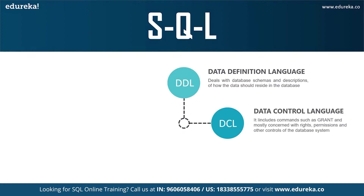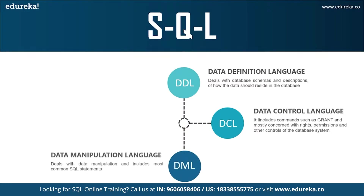Moving on to DCL, that is Data Control Language. It allows you to control access to the database. The GRANT command gives users access privileges to the database, while REVOKE withdraws user access privileges previously given via the GRANT command. The next command is DML, that is Data Manipulation Language. It allows you to access and manipulate data — insert, update, delete, and retrieve data from the database. INSERT is used to insert data into a table, UPDATE modifies existing data, and DELETE removes records from the database.